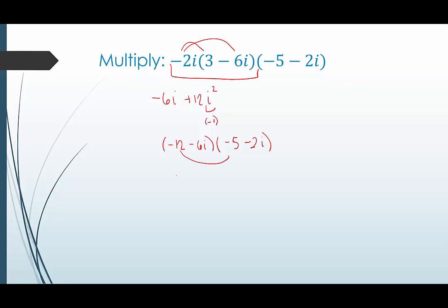Let's see. We get negative 12 times negative 5 is positive 60. Negative 12 times negative 2i would be positive 24i. Negative 6i times negative 5 would be positive 30i. And negative 6i times negative 2i will be positive 12i squared.